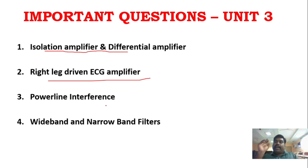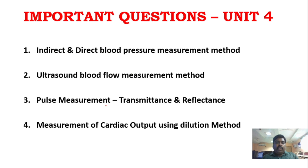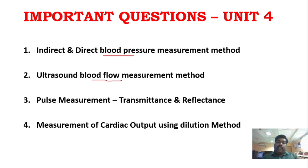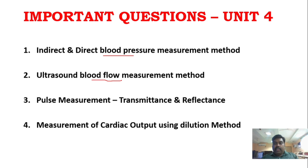For different types of amplifiers, study all of them. In Unit 4, temperature and respiration, blood pressure, and blood flow measurement are very important. Pulse measurement — both transmittance and reflectance methods — is another question. Similarly, measurement of cardiac output covers 4 questions in total, so you can handle 4 measurements.